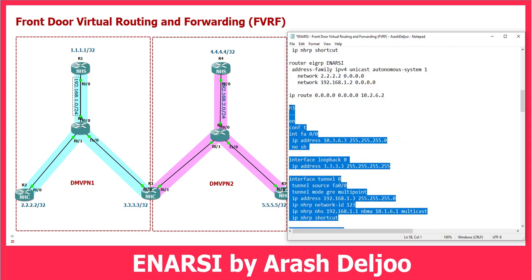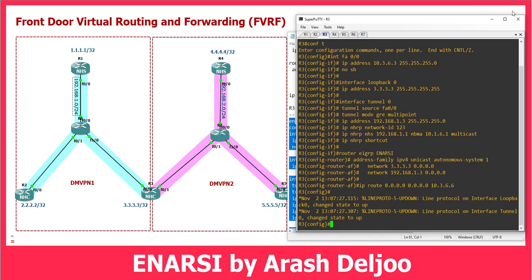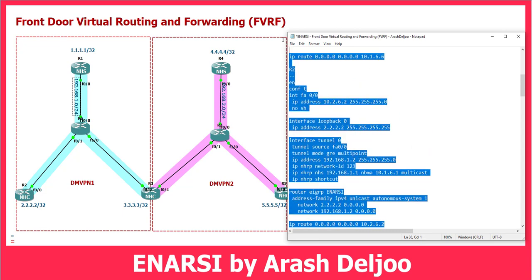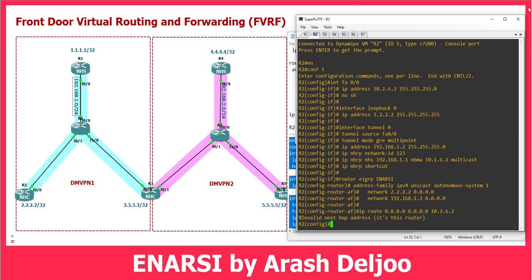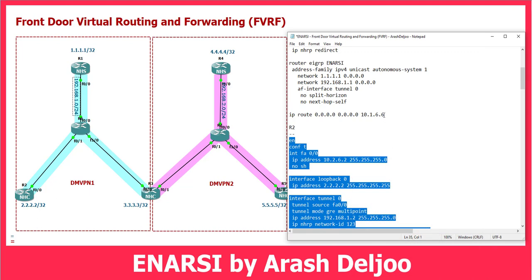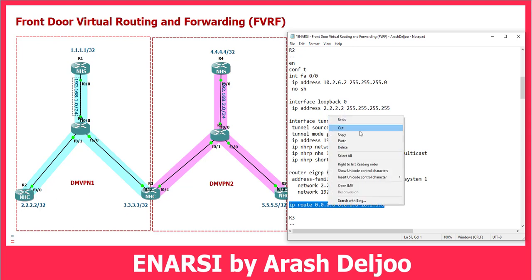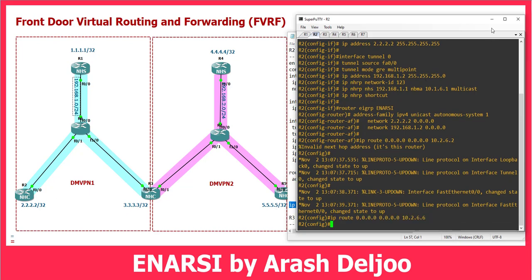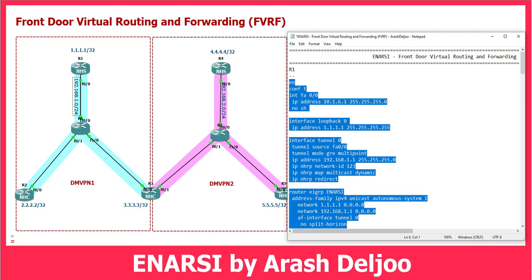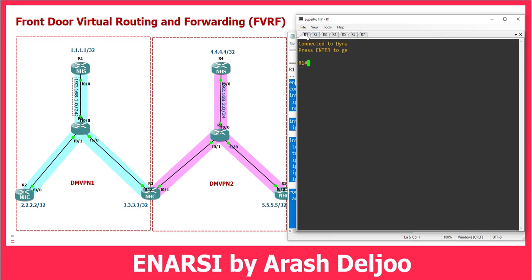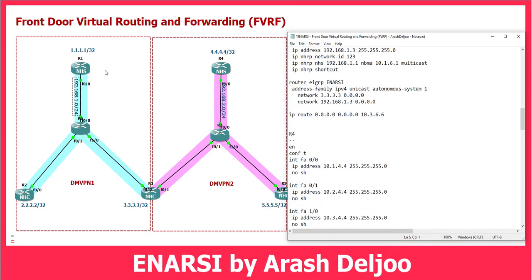Let me copy and paste the R3 configuration first — no error messages. Then Router 2: copy and paste the configuration. There was one mistake in the static route — next hop should be 10.2.6.6. Then paste Router 1's configuration. Also we should configure Router 6, which is important for this DMVPN.